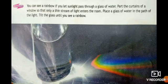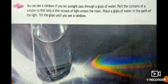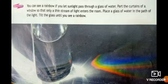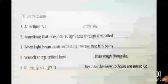You can see a rainbow if you let sunlight pass through a glass of water. Part the curtains of a window so that only a thin stream of light enters the room. Place a glass of water in the path of light and tilt the glass until you see a rainbow. You can do this activity when you get bright sunlight.